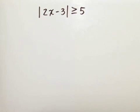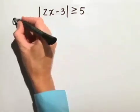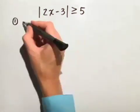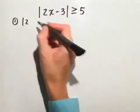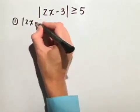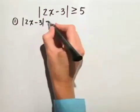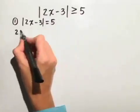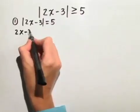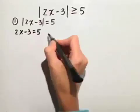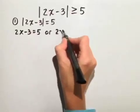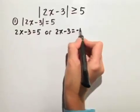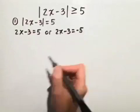Let's solve the absolute value inequality by the boundary point method. First, we'll solve the absolute value equation: the absolute value of 2x minus 3 equals 5. We solve that by making two equations: 2x minus 3 equals 5, or 2x minus 3 equals negative 5.